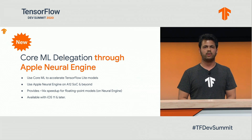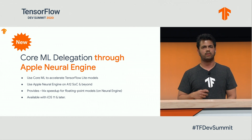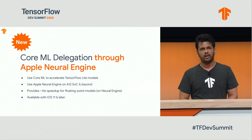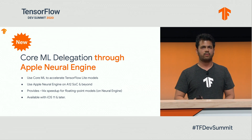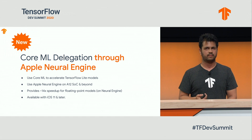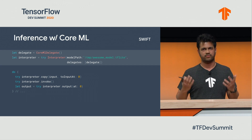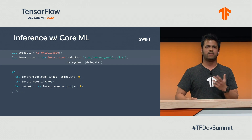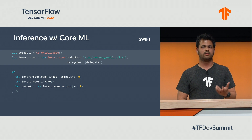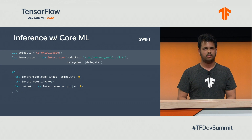We are also excited to announce the Core ML delegate, which uses Apple's neural engine to run faster inference on iOS devices. It runs on the A12 SoC and above, and it provides up to 14x speedup on a lot of the mobile models that are used for on-device inference. It is available on iOS 11 and later. This is how you would run inference with the Core ML delegate using Swift, which is the language of choice for iOS development. The basic idea remains the same: you initialize the object and then pass it on to our interpreter.